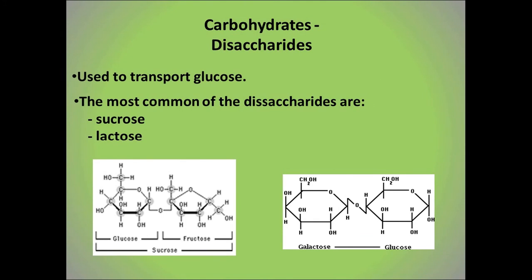The most common disaccharides are sucrose and lactose. Sucrose is created when glucose is bonded to fructose — this is the transport form most plants use, and we know it as table sugar. Lactose is created when glucose is bonded to galactose, called milk sugar because it's the sugar found in mother's milk. Adults or children that don't have enough of the enzyme to break lactose apart efficiently are said to be lactose intolerant.